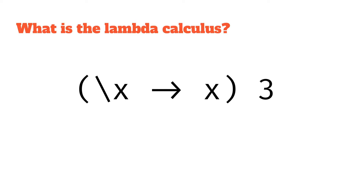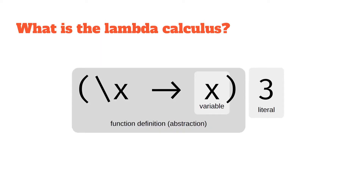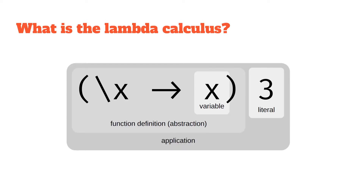Going back to our expression, we can break this down into its component parts — the key building blocks of any expression in the lambda calculus. The x on the right hand side of the arrow is a variable, just like a variable in any other programming language. The three could be a variable or, in this case, a literal number. The whole backslash x arrow expression including the function body is our function abstraction, and we're applying these two things in a process called function application.